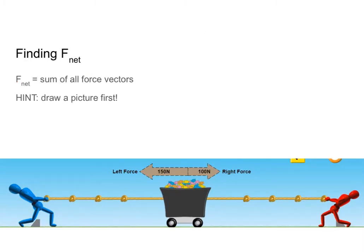Where we're going to start is by drawing a picture. You can see below I have a picture of my blue man and my red man pulling on this wagon with different amounts of force and in opposite directions. My first step is drawing a picture, and what I like to do is draw arrows representing each of the forces and label them with their names or their numbers. My force to the left is 150 newtons and my force to the right is 100 newtons.